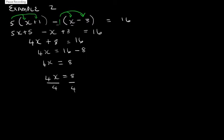But we need to divide by 4 on both sides to solve for x. That leaves us with x = 2.